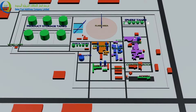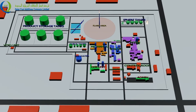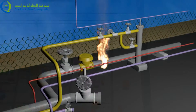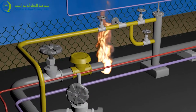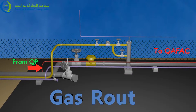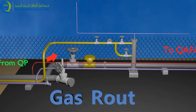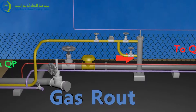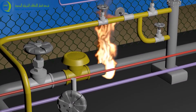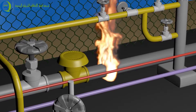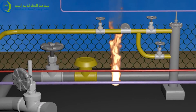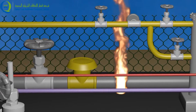This pre-planned scenario is a pressurized gas fire through a flange. Loss of containment of hydrocarbon gas occurred due to failure of a flange gasket in the gas receiving area. The gas route is from QP to CAFAC. The gas line has a 14-inch diameter and is at about 22 bar pressure. As gas continues to escape, fire is spreading to affect the installation and other gas lines in this area.